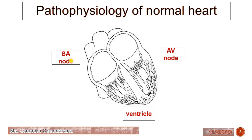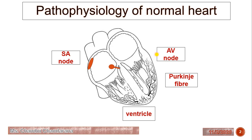So first of all, how does this heart work? The impulse is generated by the SA node, which is the pacemaker of the heart. It starts from the SA node, then it is passed to the AV node. After that it comes to the Purkinje fibers and lastly to the ventricles. This is how the pacemaker controls the rhythm.